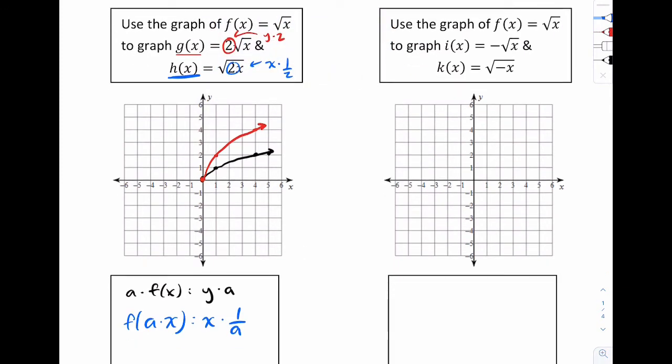So for this point, 0, 0, you know that should still be the same. Now imagine you were to plug in a point here. Let's plug in a nice point. Let's plug in like half. Half times 2 would be 1, which means that the coordinate should be half 1. So that point goes right there. The next one we can plug in, let's plug in 2. So 2 times 2, the root of 4 is 2, which means the point should be 2, 2.